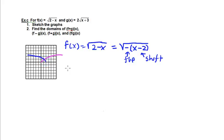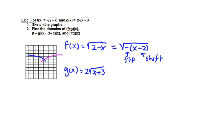The second function is g of x equals 2 times square root of x plus 3. This radical limits the domain because the values inside must be positive. We can use the standard square root function as a guide: x plus 3 shifts the function 3 units to the left, so the starting point moves. There's no flipping, but multiplying by 2 makes it taller — a value of 1 becomes 2, and 4 units out gives a value of 4 instead of 2.